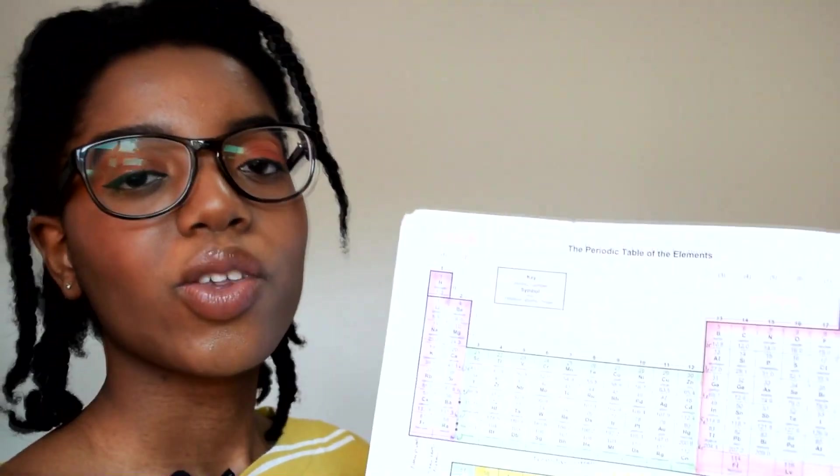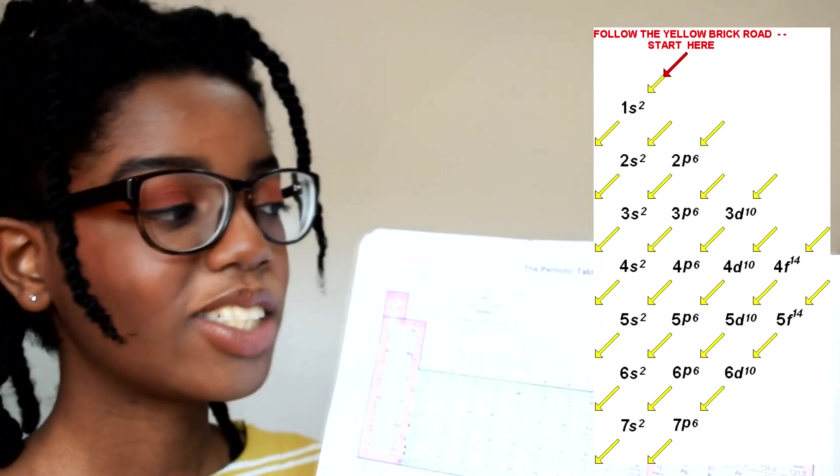Say we wanted to find the electronic configuration for carbon. It has six electrons and is in the P block.